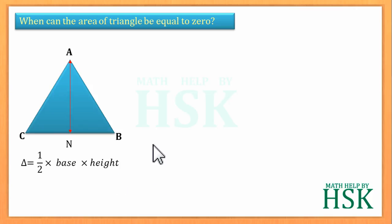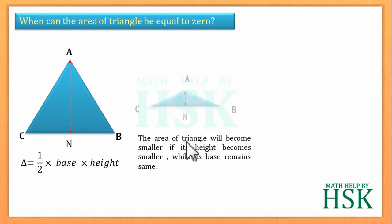Now if the base of triangle remains the same but its height is made smaller, then the area of the triangle will become smaller. Lesser is the height, lesser will be the area. But when height of the triangle is zero, then area of the triangle will be zero.